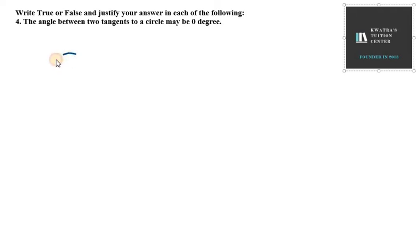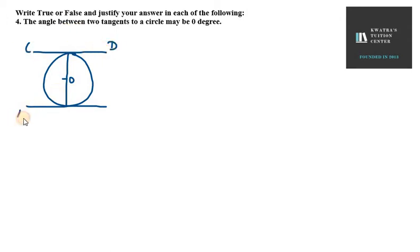So he's saying that if we take two tangents of one circle, then what will it be like zero degree angle between two tangents? So first of all, let's see what the relation comes between these two. So here we have two tangents, C, D and A, B respectively.